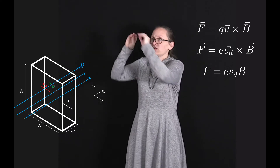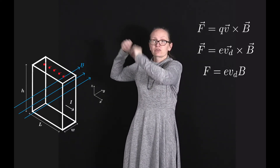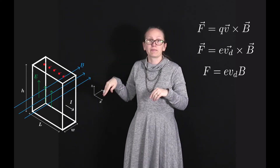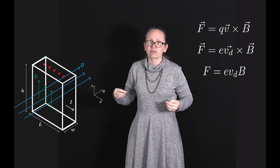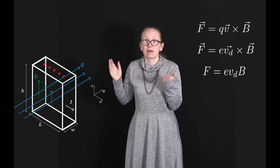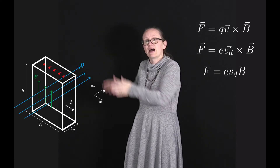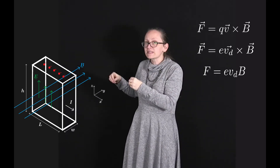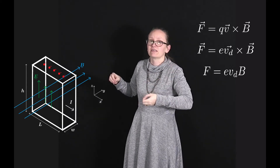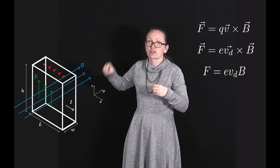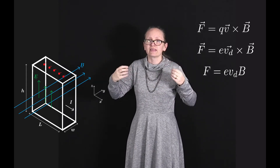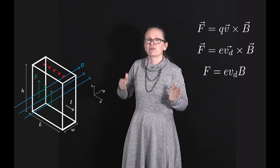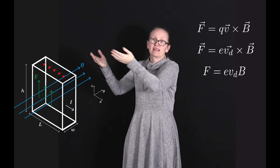So electrons accumulate at the top of the conductor, since they're free to move. With more electrons at the top than the bottom, an electric field is established pointing upward toward the negative charge. The electrons feel a force due to this electric field in the opposite direction — pushing them back downward. Electrons keep accumulating at the top until equilibrium is reached, where the magnetic force pushing them up is balanced by the electric force pushing them down.